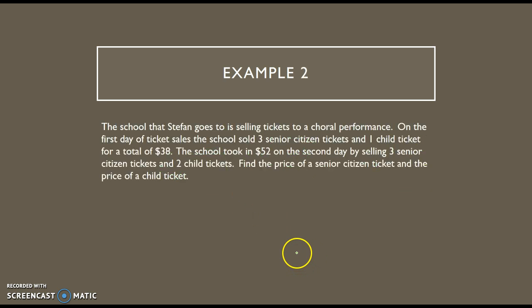Example 2. The school that Stefan goes to is selling tickets to a Coral Performance. On the first day of ticket sales, the school sold 3 senior citizen tickets and 1 child ticket for a total of $38. The school took in $52 on the second day by selling 3 senior citizen tickets and 2 child tickets. Find the price of a senior citizen ticket and the price of a child ticket.